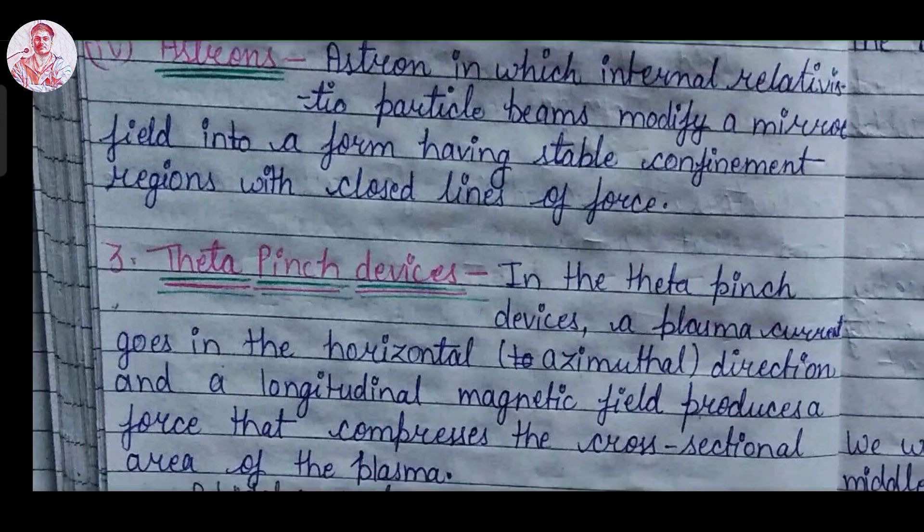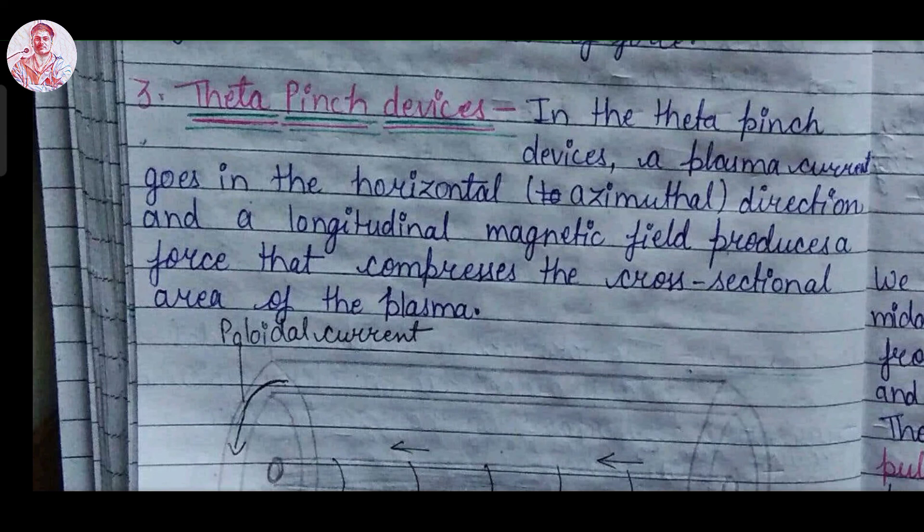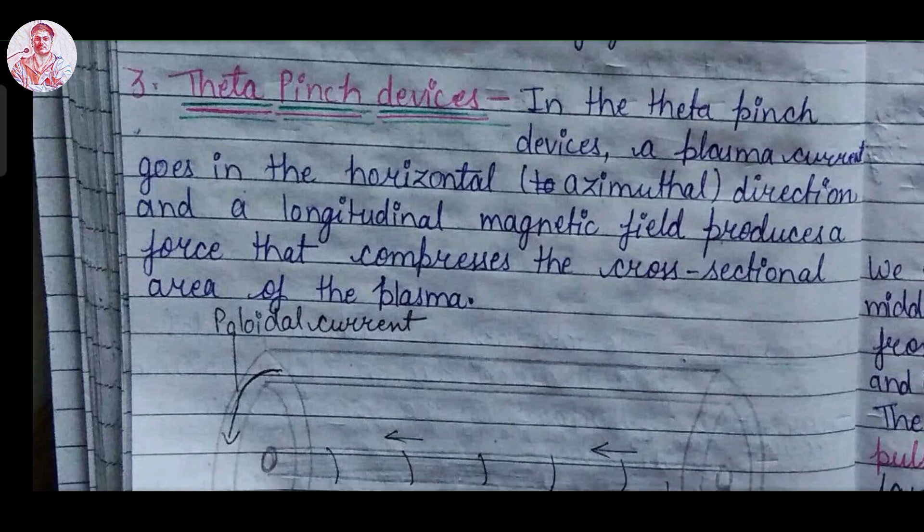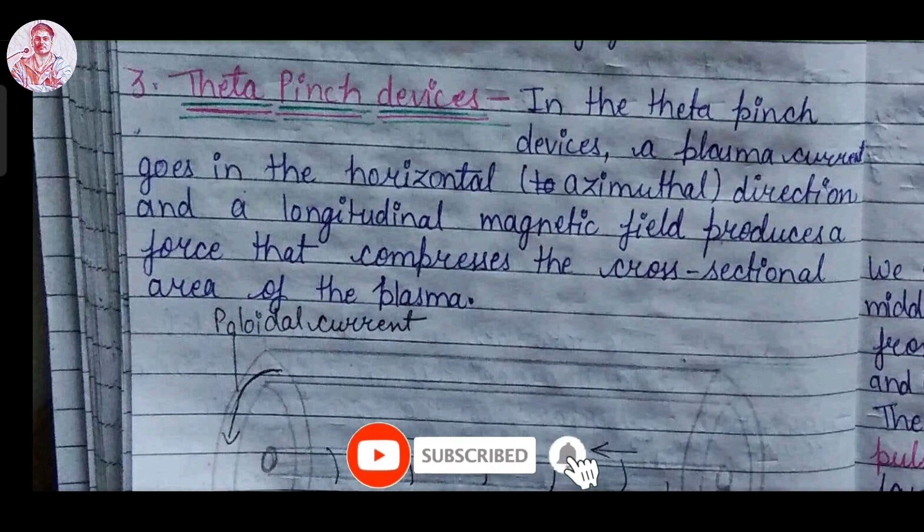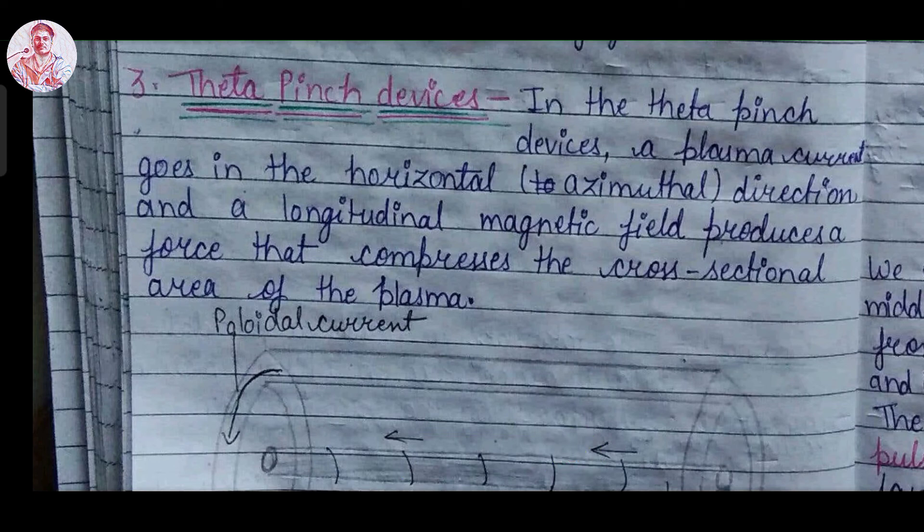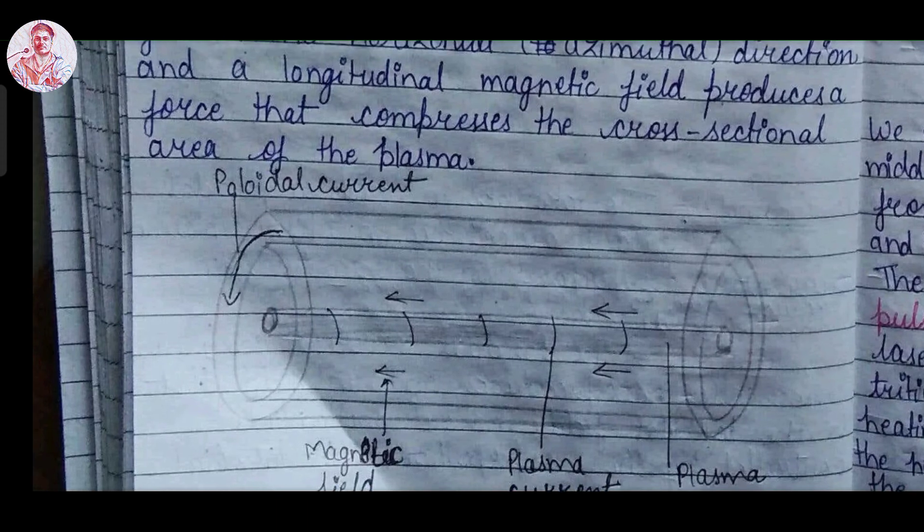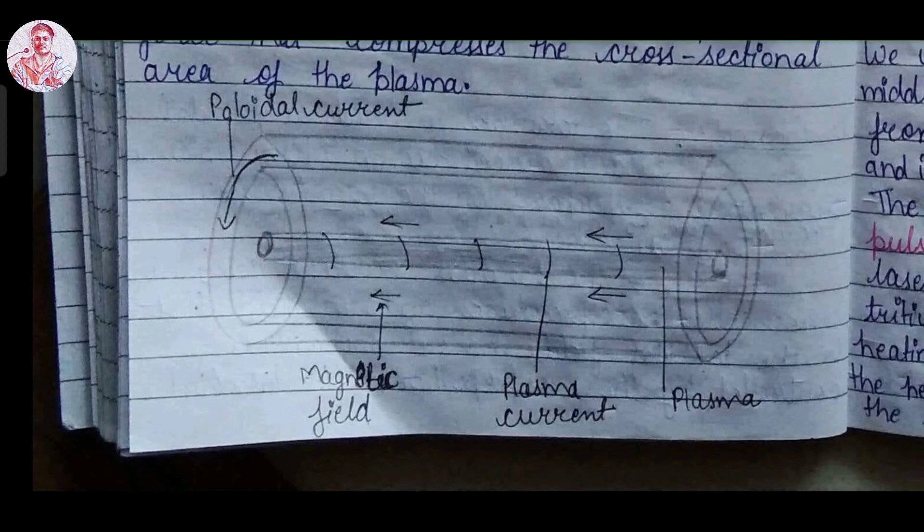Now we have the third confinement technique of plasma through theta pinch devices. In the theta pinch devices, a plasma current goes in the horizontal or we can say in azimuthal direction. And the longitudinal magnetic field produces a force that compresses the cross sectional area of plasma. In the figure you can see that if the current is circular, it will produce a longitudinal field which will compress the cross sectional area of plasma.